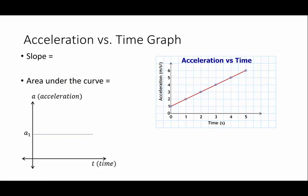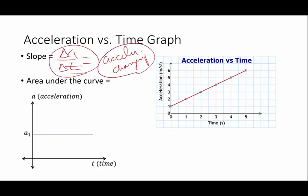Acceleration versus time graph. The slope is going to be the change in acceleration divided by the change in time. And that is the rate of change of acceleration. This is accelerated motion that is actually changing. And that is beyond the scope of our course. We're not going to mathematically deal with that, but that's what that means. This graph here is actually a graph of constant acceleration.